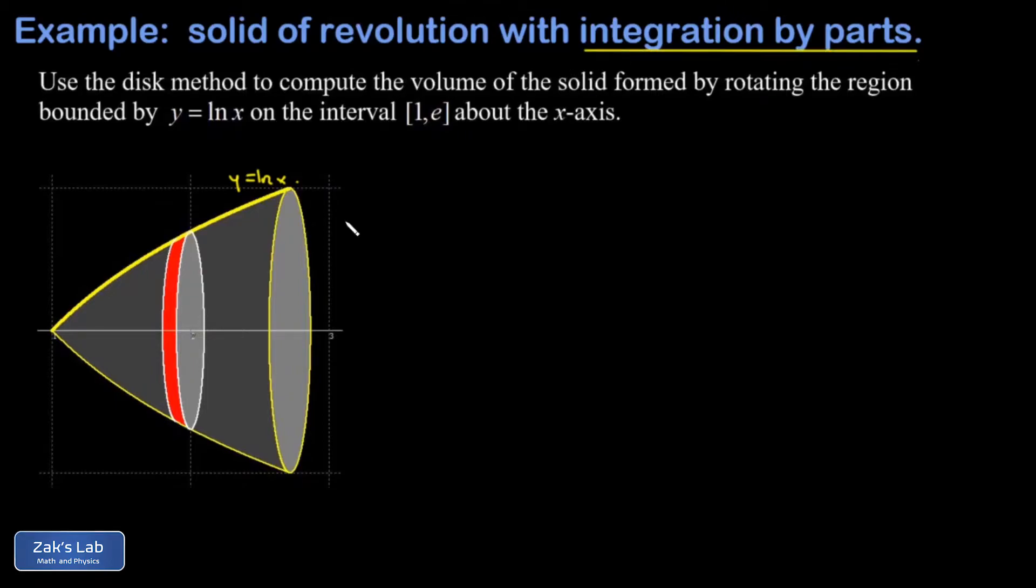We want to find an expression for the incremental volume contributed by this disk, and that's just area times thickness. The area depends on the radius. Well, for some arbitrary location x, the radius of this disk is just the natural log of x.